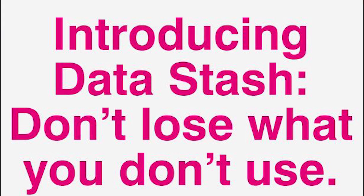T-Mobile has introduced something new in their Uncarrier 8 event. I can't believe they're already at 8, and they're calling it Data Stash — and it's great. Don't lose what you don't use, guys. Starting with your January bill cycle, Data Stash will be available to all T-Mobile postpaid Simple Choice customers. Sign up for a postpaid Simple Choice plan with 4G LTE data — minimum of 3 gigabytes on a phone, or a minimum of 1 gigabyte on a tablet. Use your data all month to stream, surf, and download worry free. At the end of the month, all your unused 4G LTE data, rounded up to the nearest megabyte, rolls into your stash to be used any time in the next 12 months. Great — we love T-Mobile.